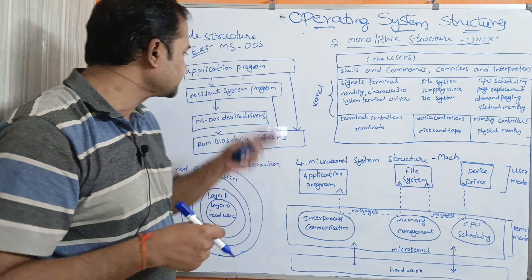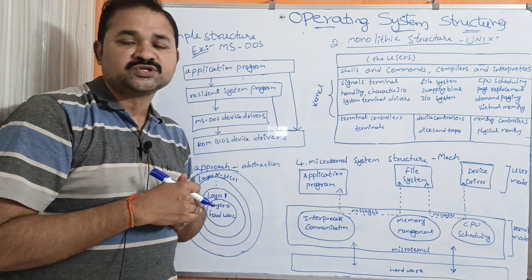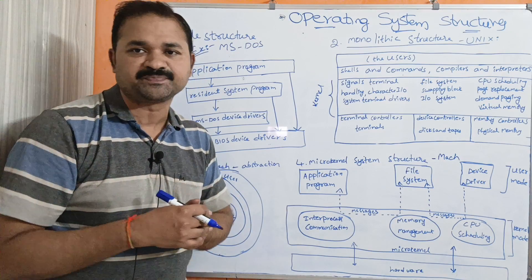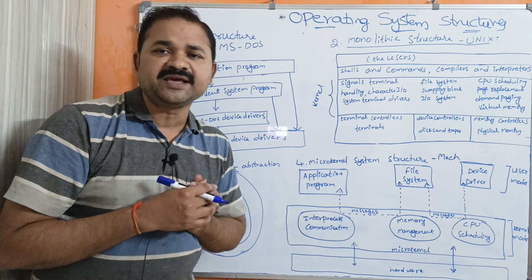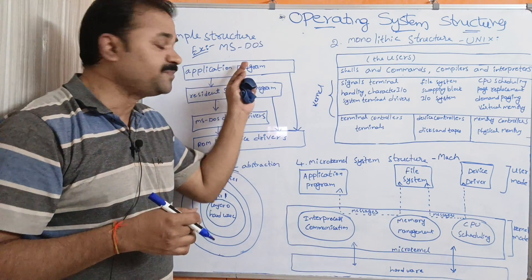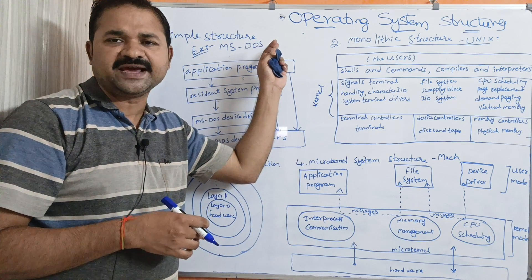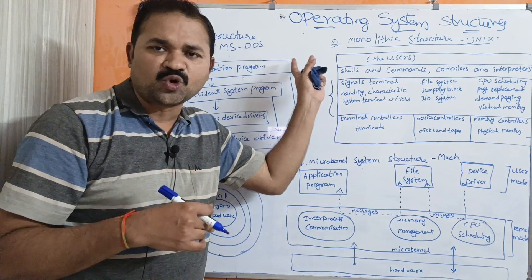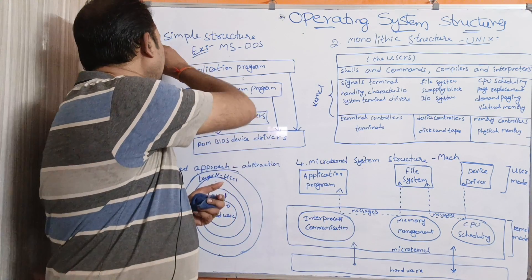The major problem is that an application program can access the hardware devices directly. So there is a possibility that the application program may change the content of the hardware. An application program is a program developed by the user. If it crashes, the entire system will fail — because the application program has direct access to hardware devices. This is the problem with simple structure.